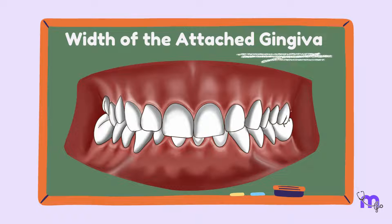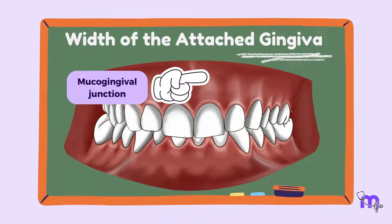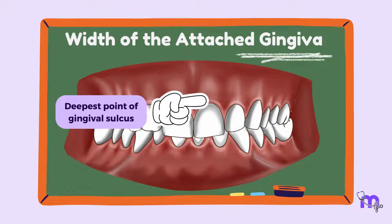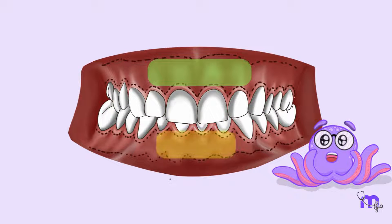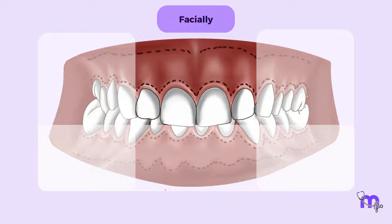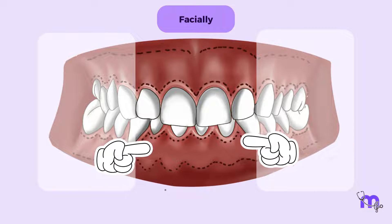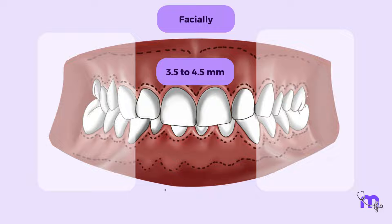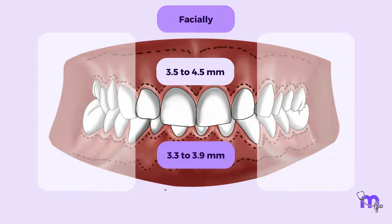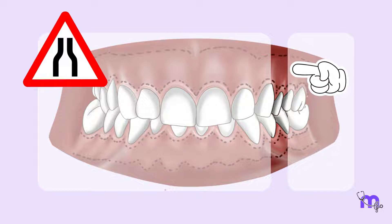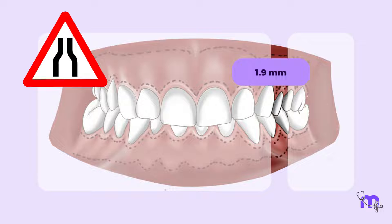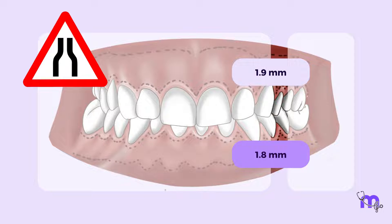The width of the attached gingiva is the area between the mucogingival junction and the deepest point of the gingival sulcus or periodontal pocket. Different parts of the mouth have different widths of attached gingiva. Facially, the attached gingiva is the widest in the maxillary and mandibular incisor region, which is 3.5–4.5 mm and 3.3–3.9 mm respectively. It is narrower in the region of the first premolar, which is 1.9 mm in the maxillary and 1.8 mm in the mandible.